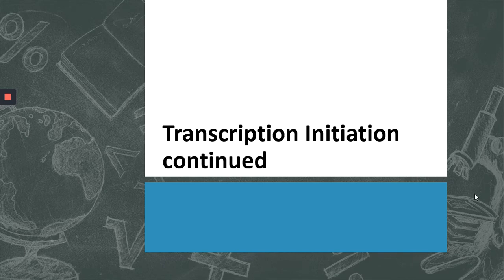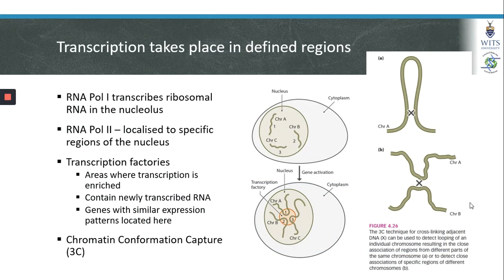Hi again students, let's continue with our lecture on transcription initiation. I'd now like to discuss where transcription takes place. We now know that transcription takes place in specific or defined regions of the nucleus. It has long been known that RNA polymerase 1 transcribes ribosomal RNA in a region of the nucleus called the nucleolus.